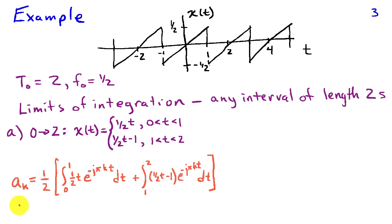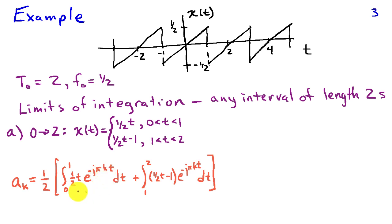Plugging into the integral formula, a_k is (1/2) — since T0 is 2 — times the integral from 0 to 1 of (1/2)t e to the minus jπkt dt. In the exponent I've substituted 1/2 for f0, which eliminates the extra factor of 2 multiplying π. Then I have another term: the integral from 1 to 2 of the quantity [(1/2)t minus 1] times e to the minus jkπt dt.